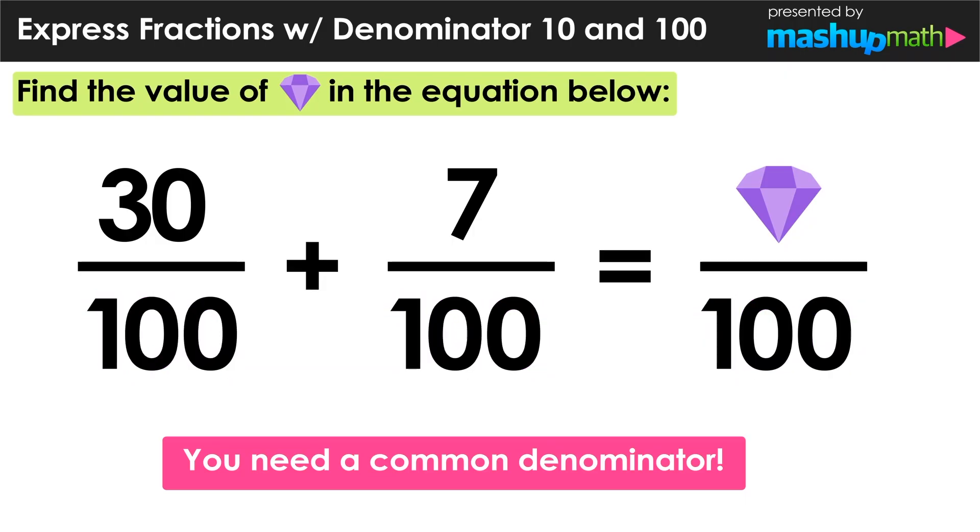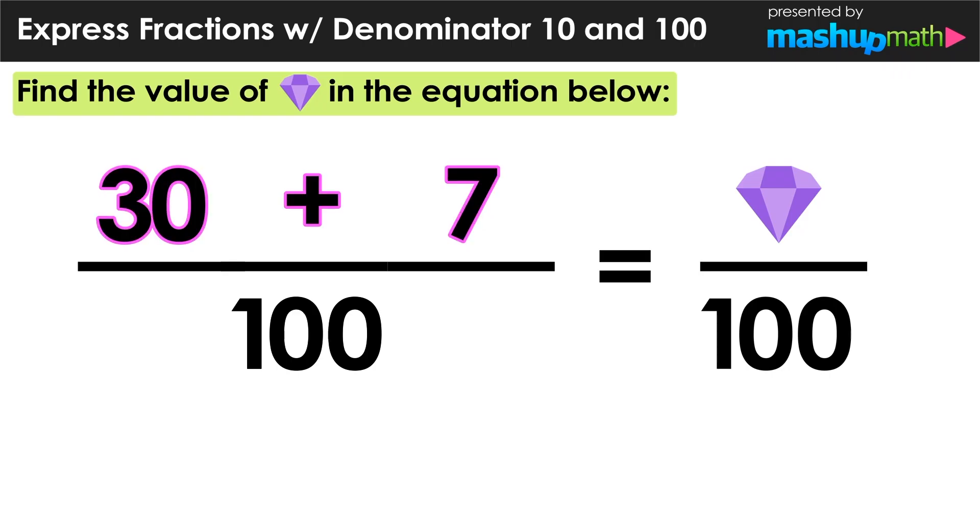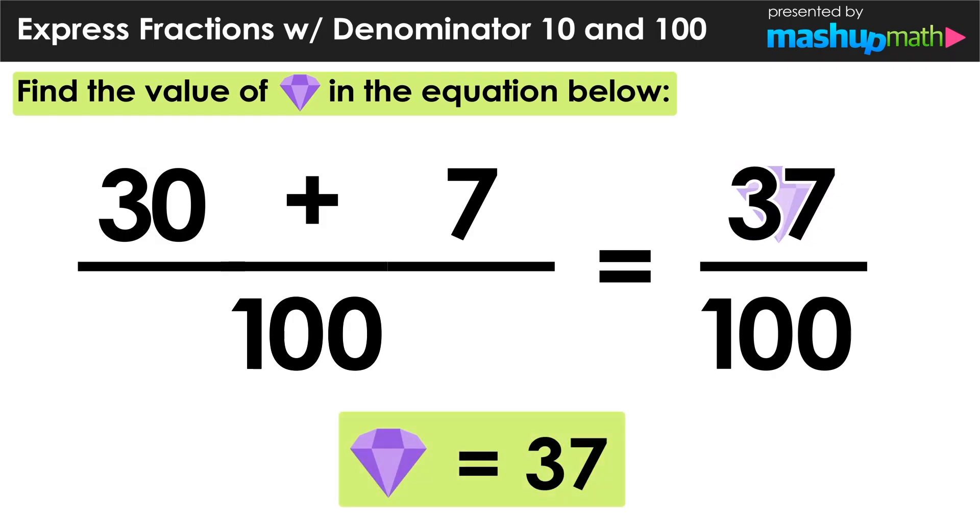Which allows us to perform the addition of the two fractions on the left side. Since they have a common denominator, we can just add the numerators together. 30 plus 7, which is equal to 37. So we can conclude that the value of the purple diamond in this example is 37.